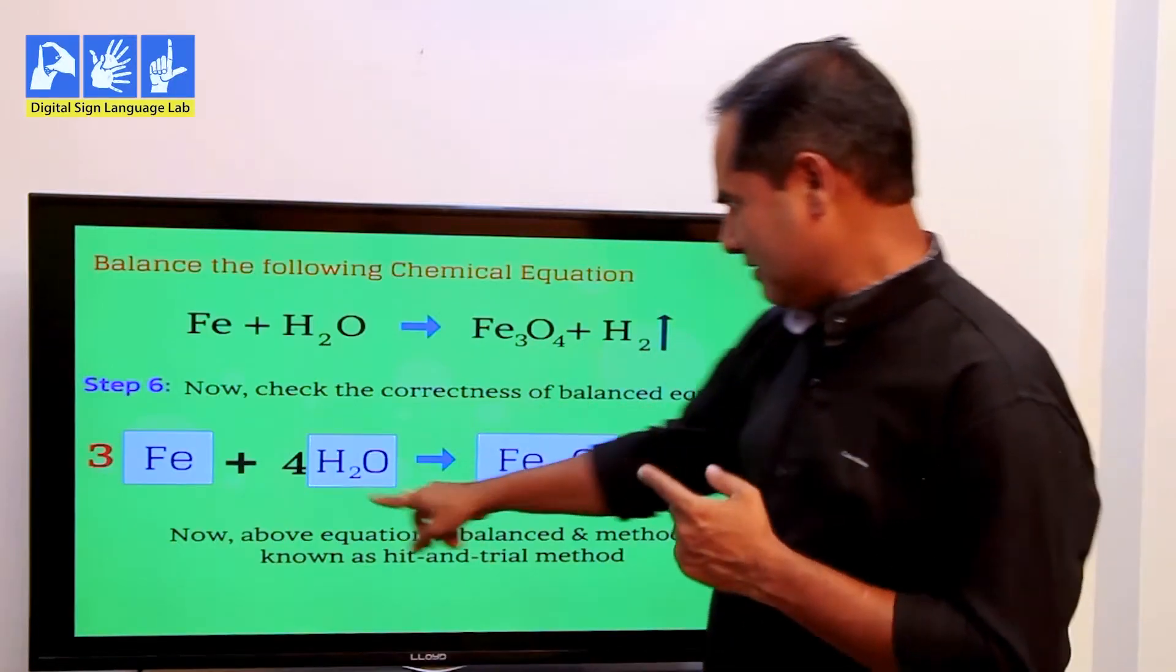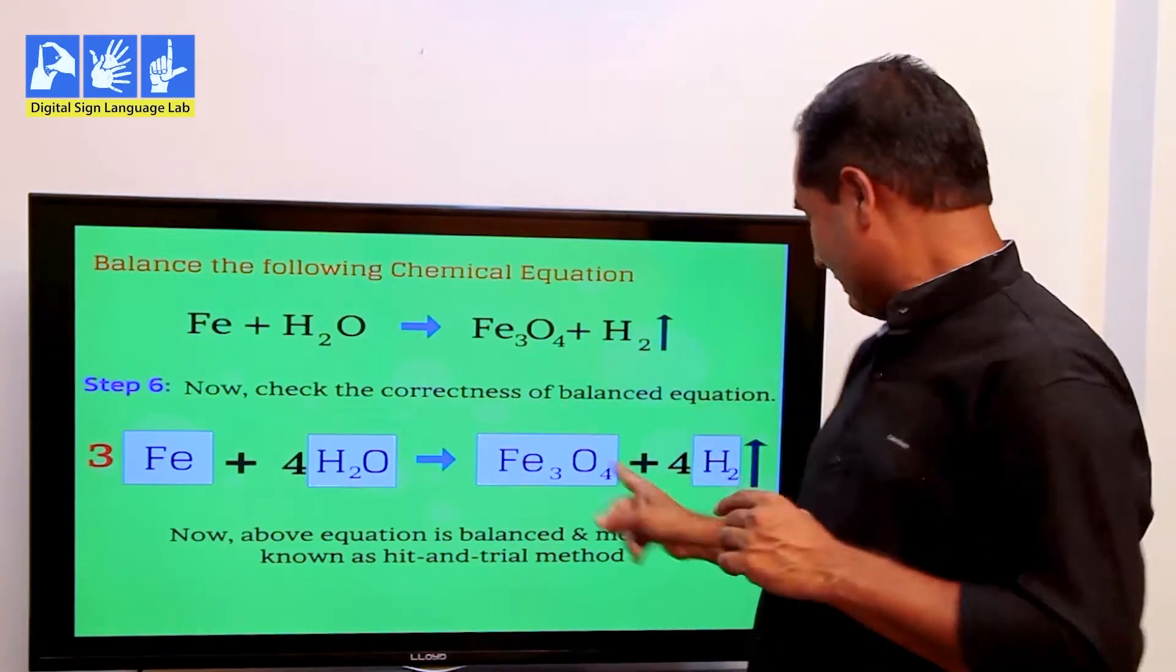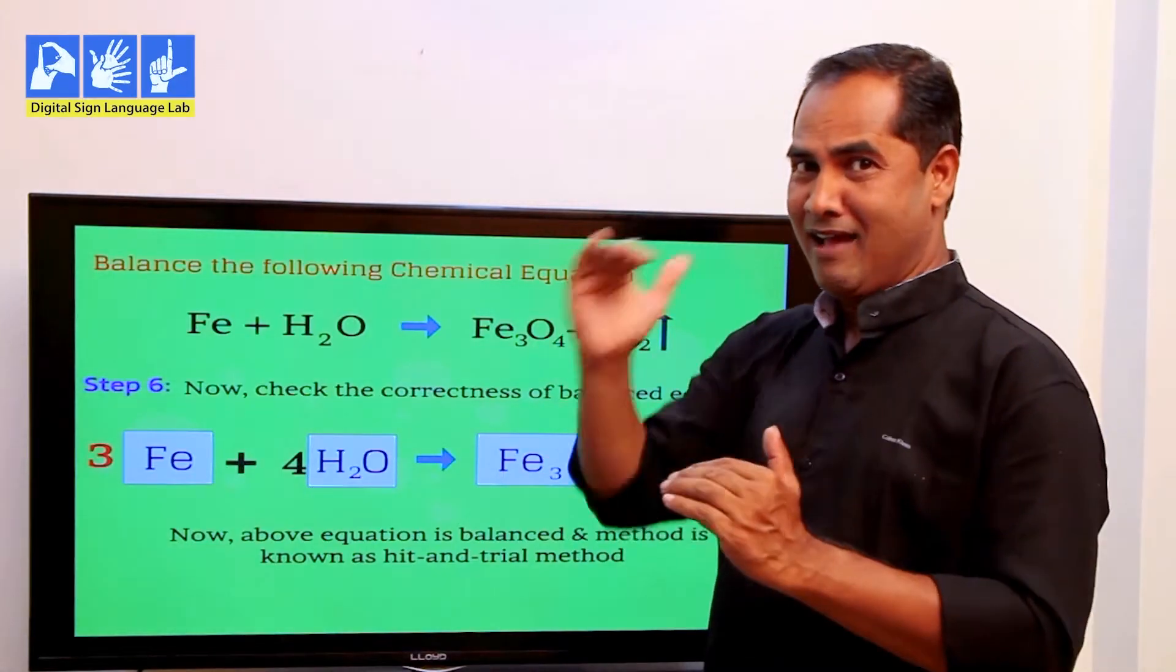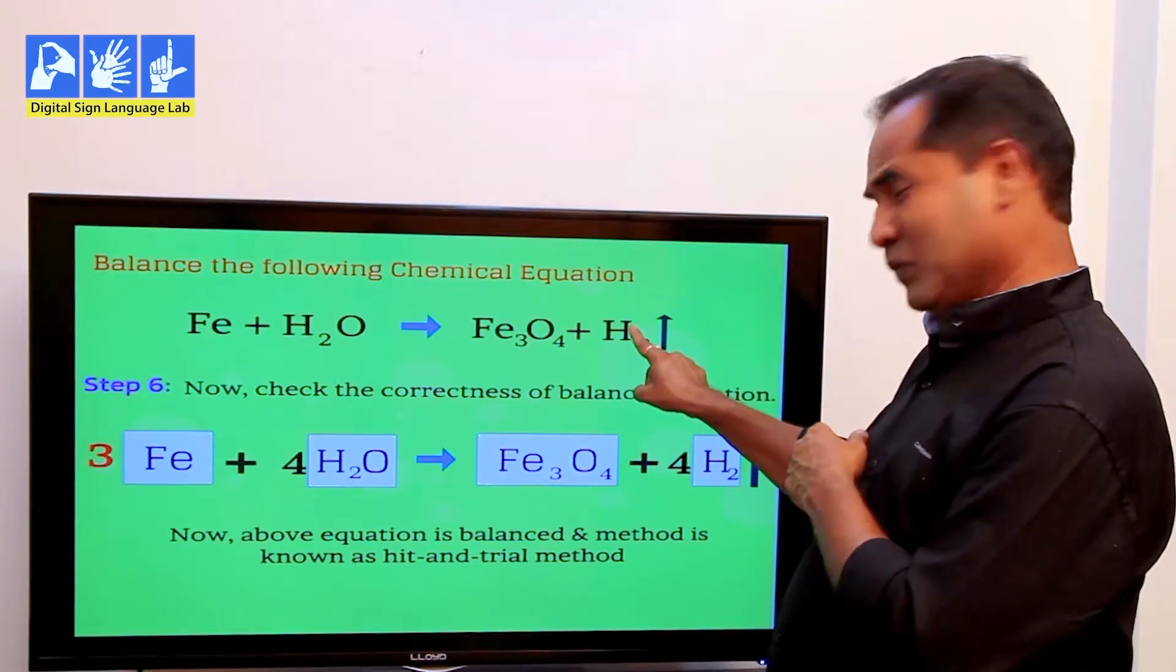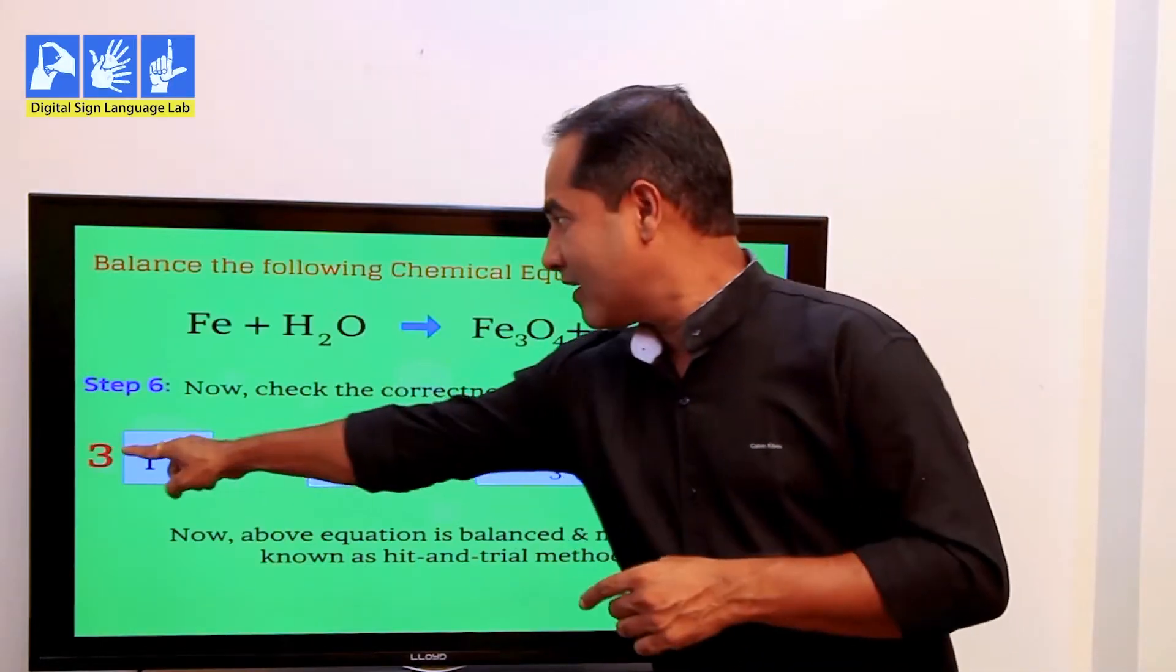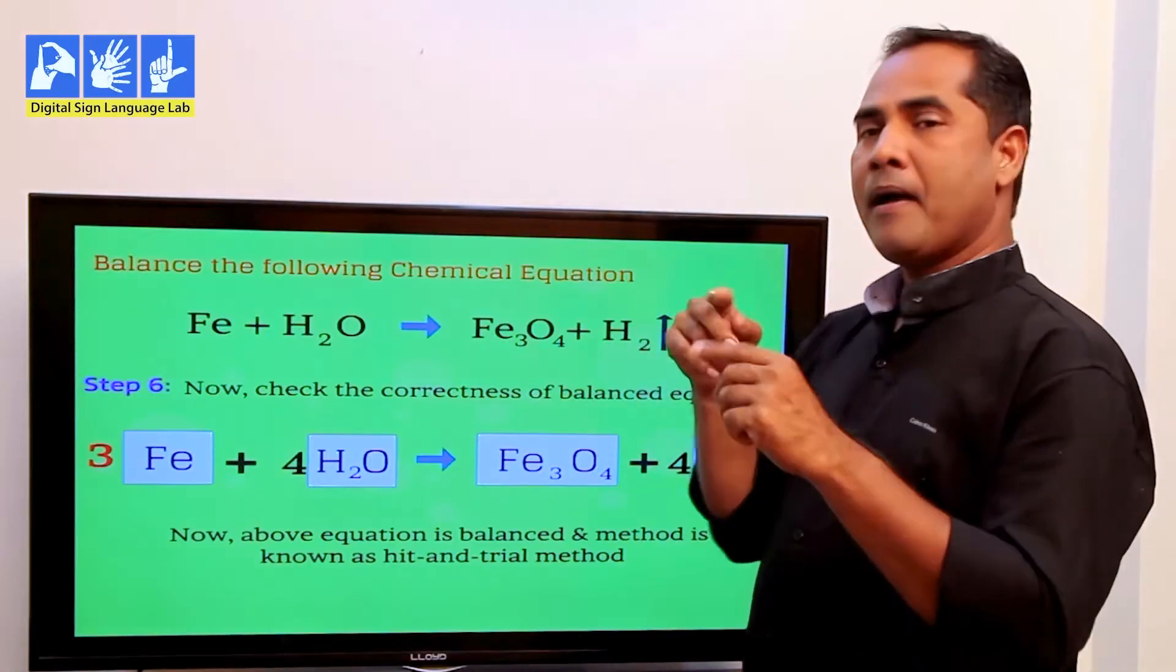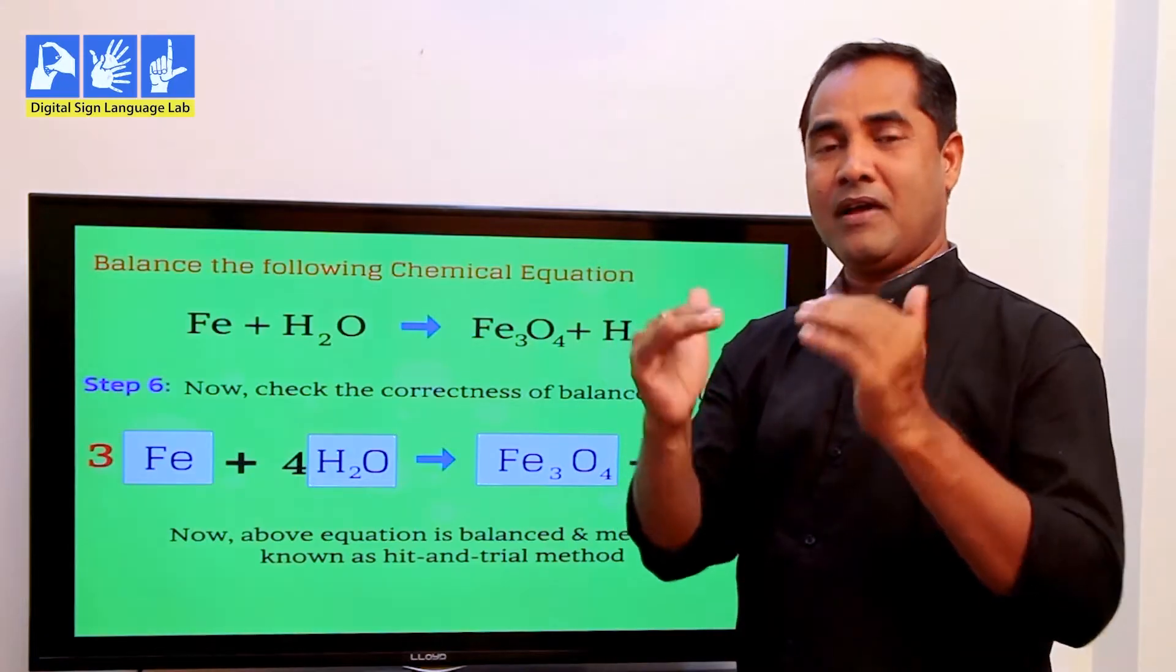Now let's see if hydrogen is balanced. On the left-hand side, we have 4H2O and on the right-hand side, we just have one molecule of H2. Now we have to balance this. So we add a 4 to right-hand side as well. Now after doing all this, let's check if the equation is balanced. Left-hand side and right-hand side, are they equal or not? This is how we balance an equation.